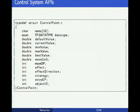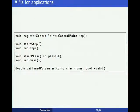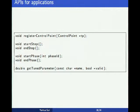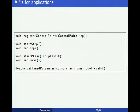Here we show the API we have developed in the Charm system, covering properties we have for the control point. In order to use the control point, users need to register it. For most scientific applications, developers can specify start time, start step, and end step using the provided functions. For multi-phase applications, a function is used to mark the phase boundary. After values have been tuned, the new configurations can be queried using the corresponding function.